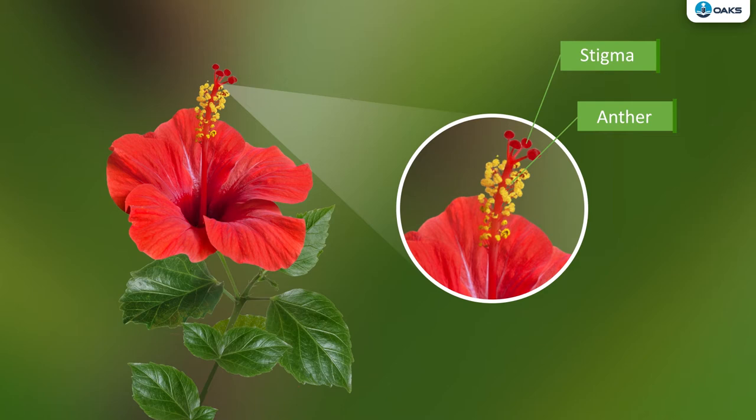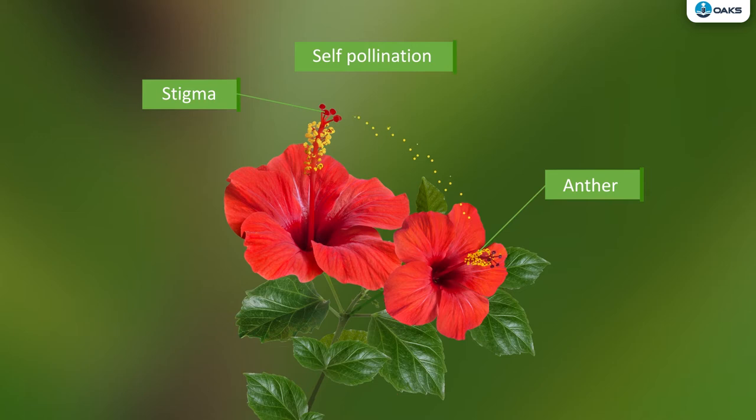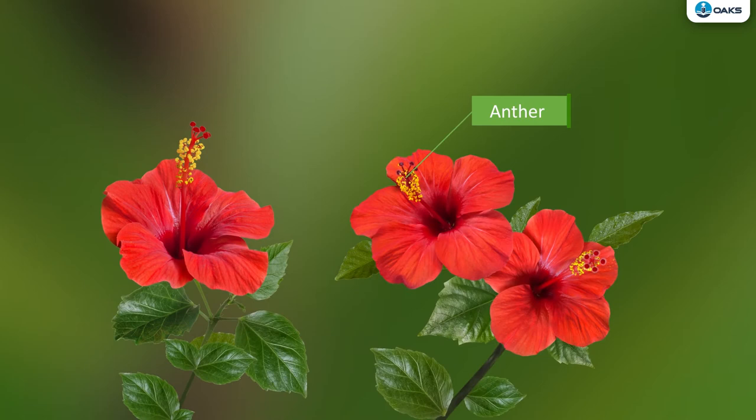If a pollen grain reaches the stigma of the same flower, it is called self-pollination. If it reaches the stigma of a different flower on the same plant, it will still be called self-pollination. But if the pollen grain somehow reaches the stigma of a flower on a different plant of the same kind, it is called cross-pollination.